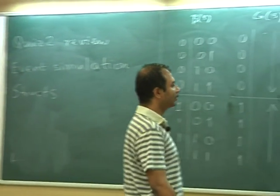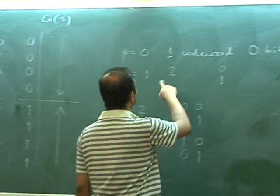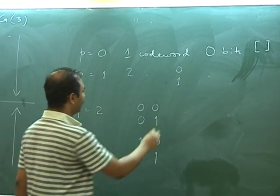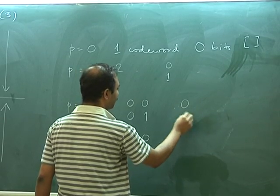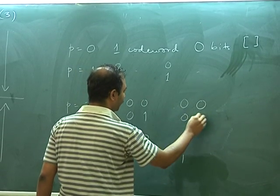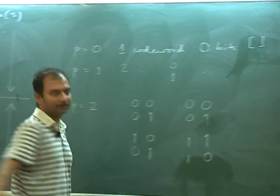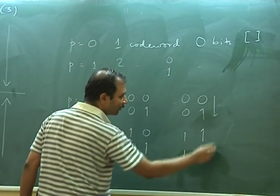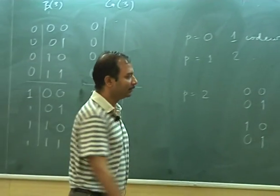So in particular for the p equal to one case it is the same. Here what will happen for the gray codes is 0, 0, 1, 1, but 0, 1, 1, 0. So this code word is reflected here.